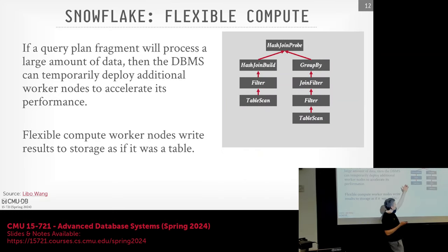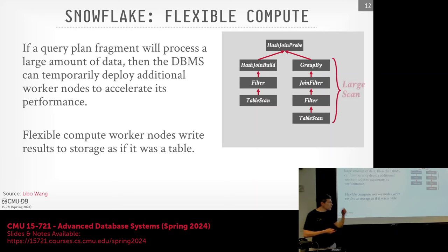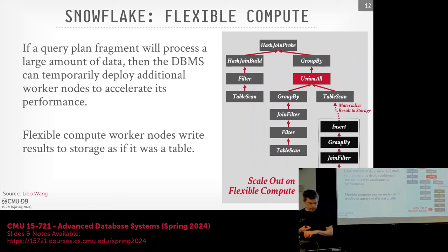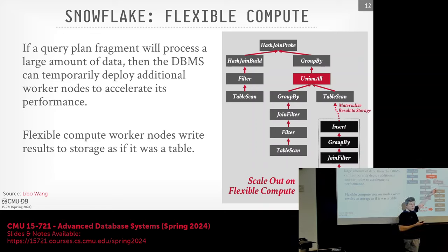This is actually an example of sideways information passing — they build the hash table for a join, and there's a join filter operator that passes a bloom filter from the build side to the probe side. Because you're writing the output of a query plan fragment into S3, you can also update the catalog to note: if we ever see this query plan fragment on these files again, here's a materialized result to reuse — essentially a form of query result caching.